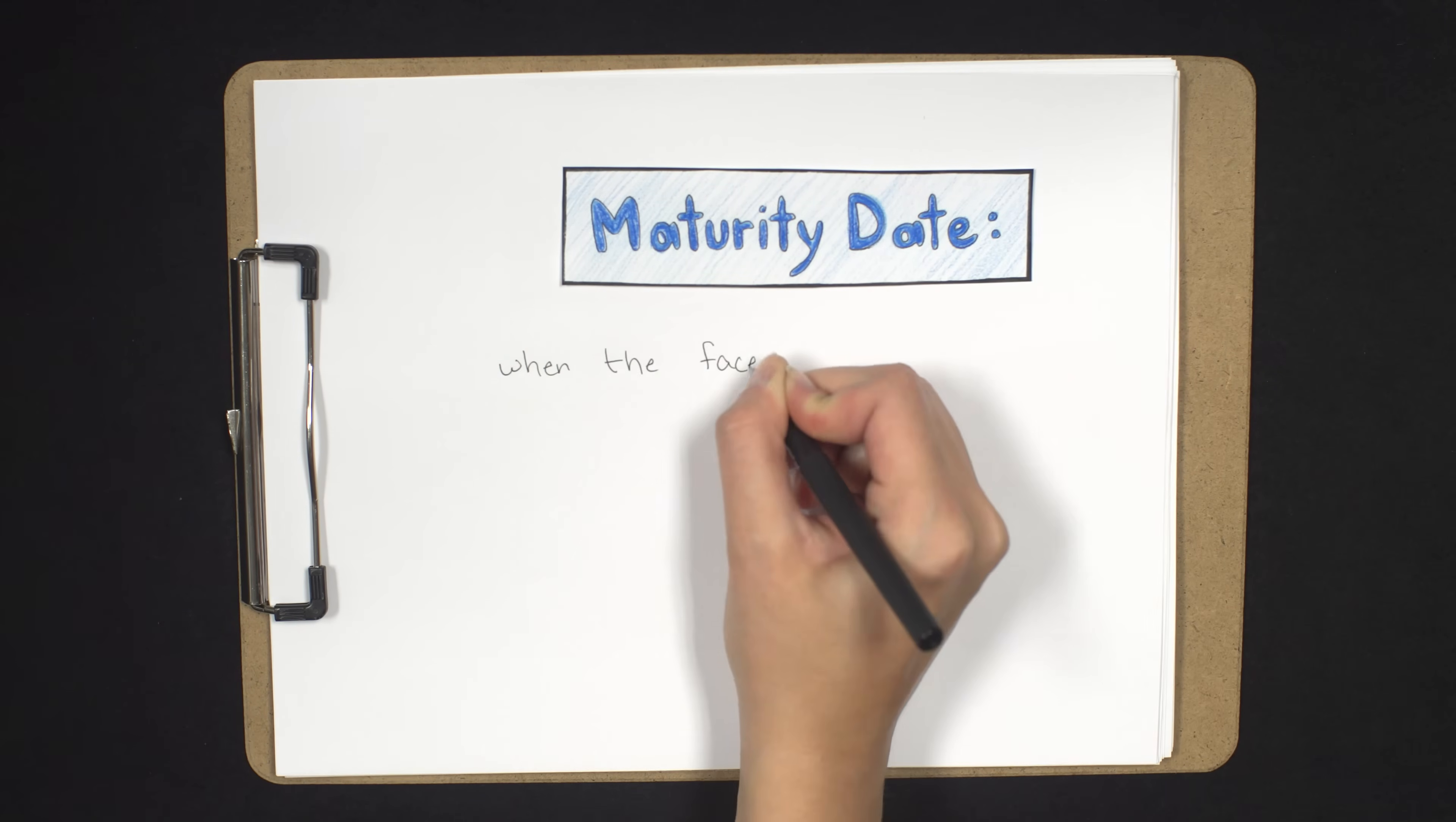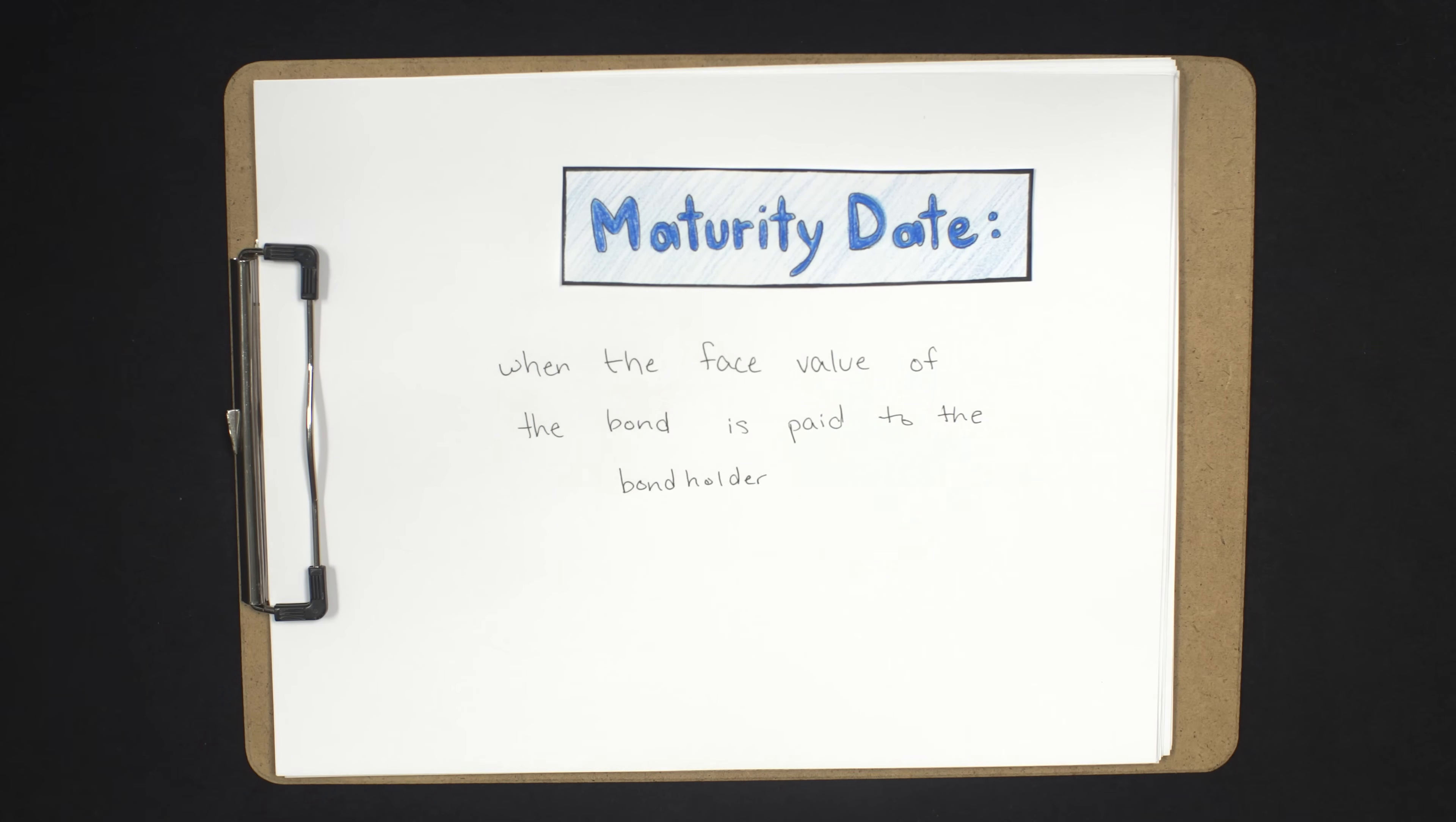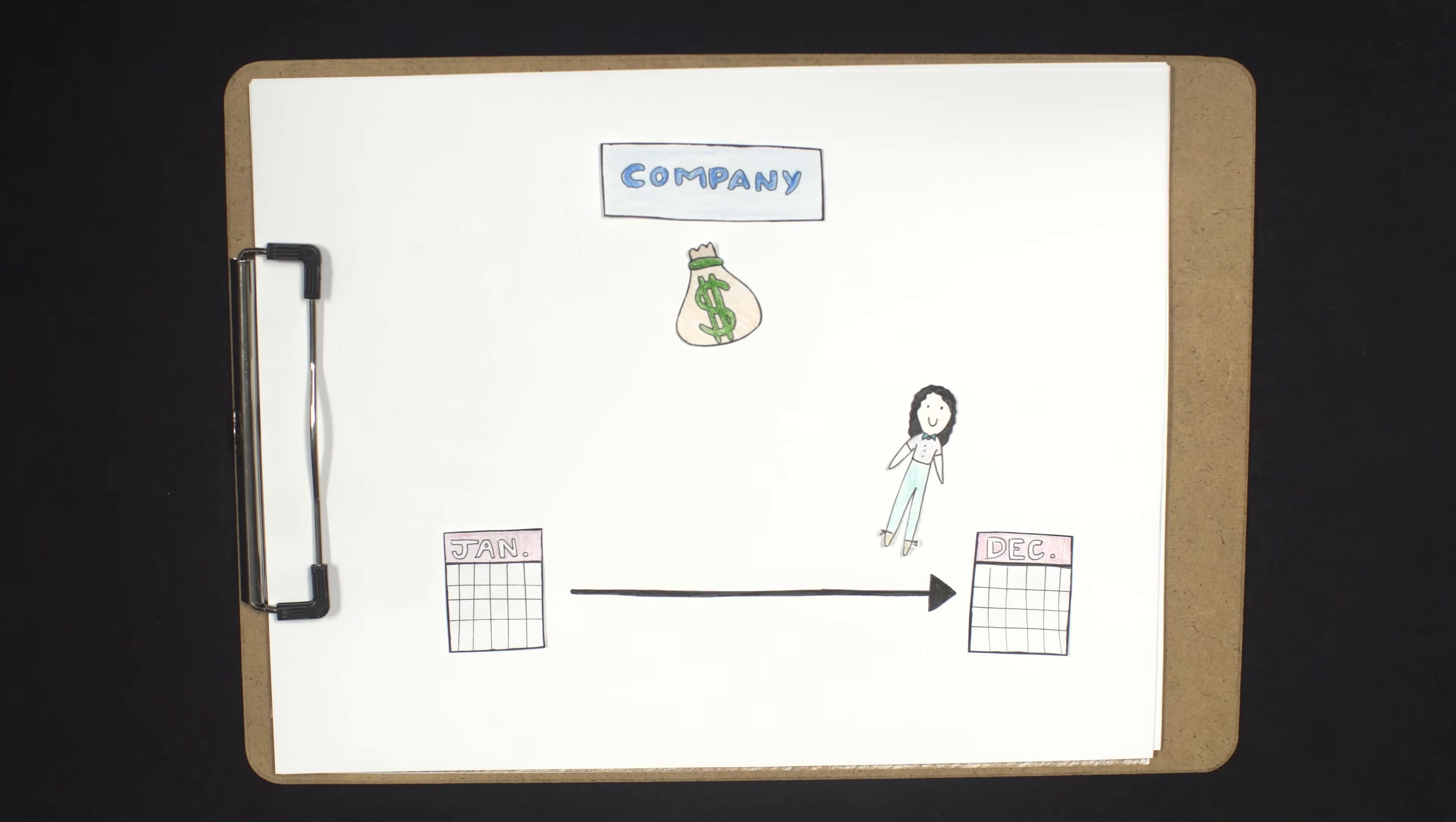A bond's maturity date is when the face value of the bond is paid to the bondholder. In our example, all three bonds mature in one year, and so their bondholders will receive $1,000, or the face value of each bond, at the end of that one year.